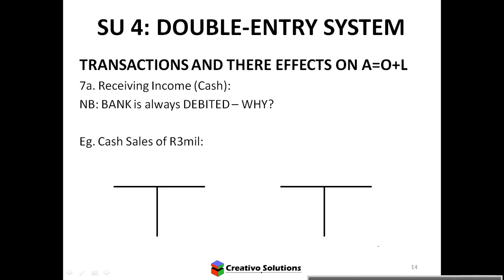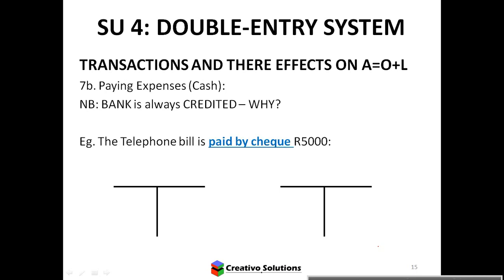Cash sales of three million: bank is increasing because it's a cash sale. The reason bank increases is that you made a sale. Sales is income, so income is credited.